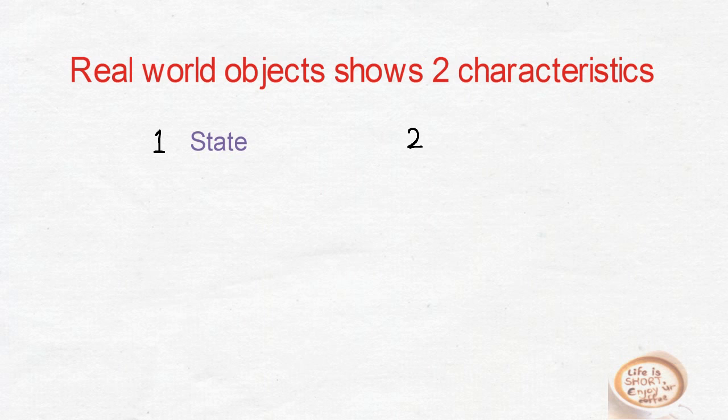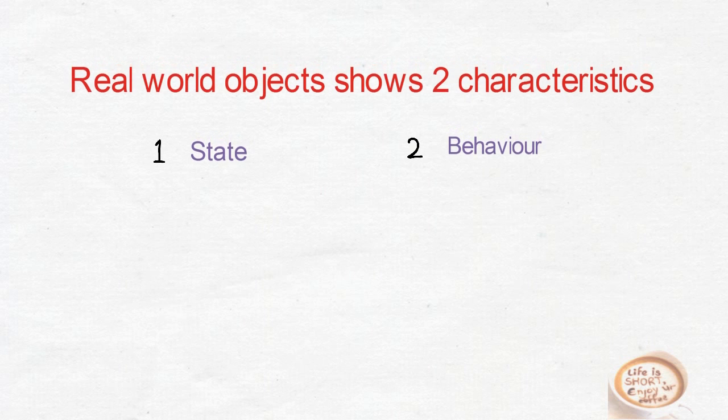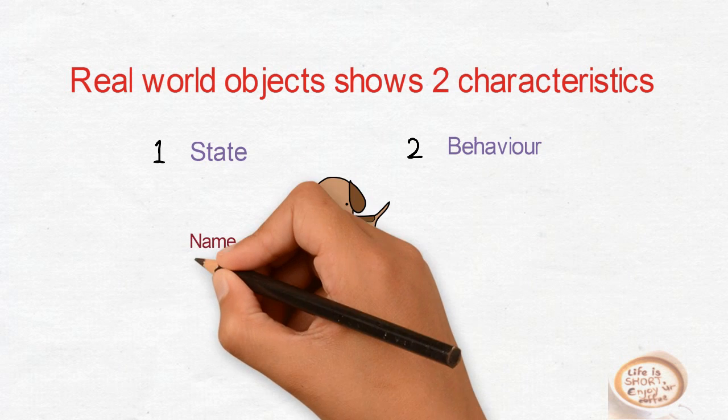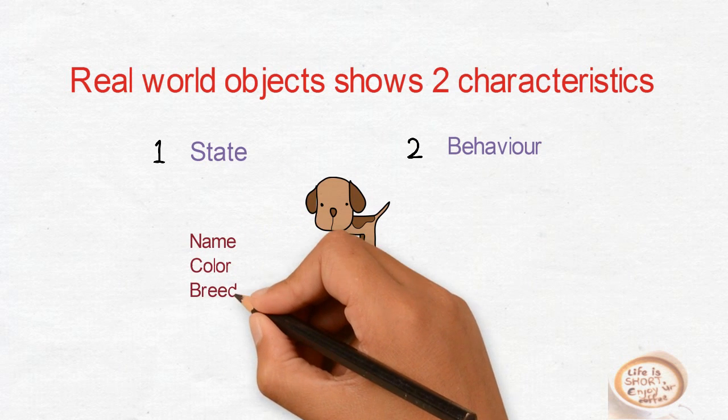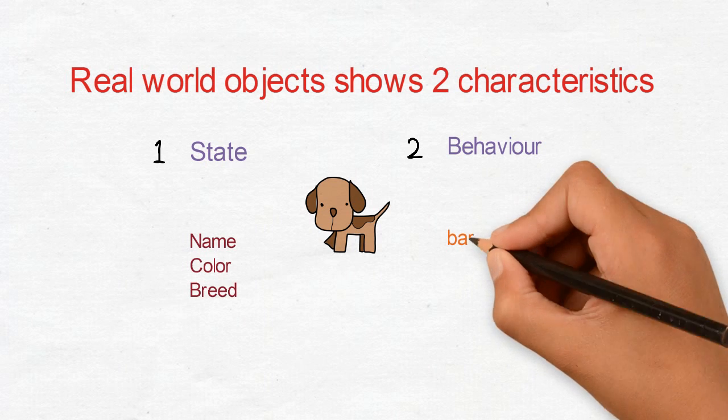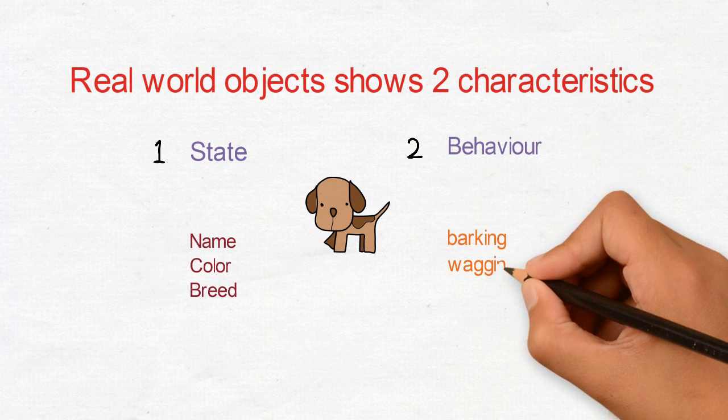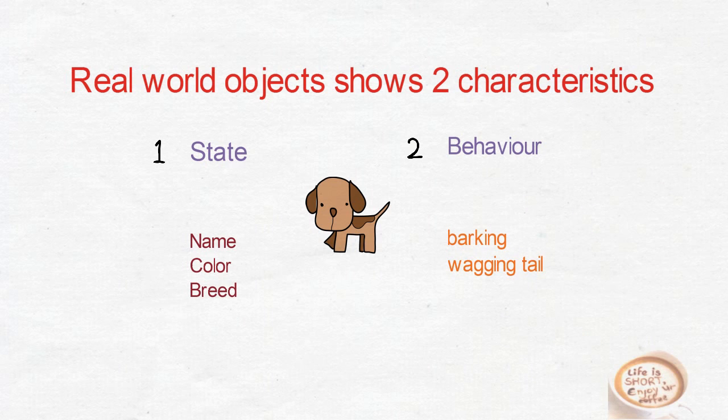Number one is state. A dog has name, color, breed. These can be the state of dog, and behavior is like barking and wagging tail.